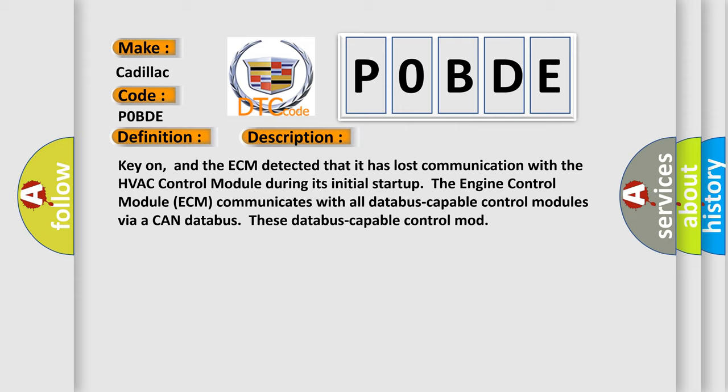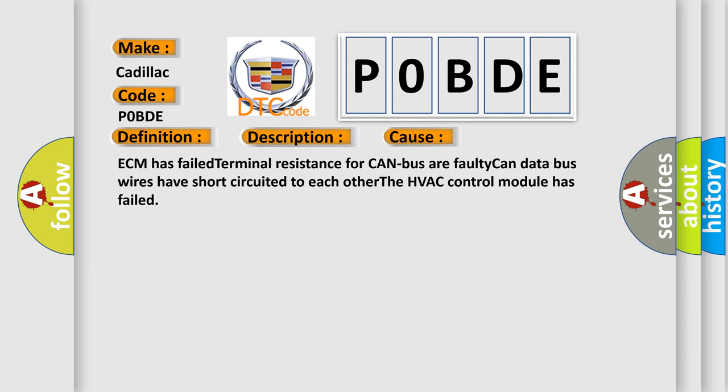This diagnostic error occurs most often in these cases: ECM has failed terminal resistance for CAN bus, or faulty CAN data bus wires have short-circuited to each other, or the HVAC control module has failed.